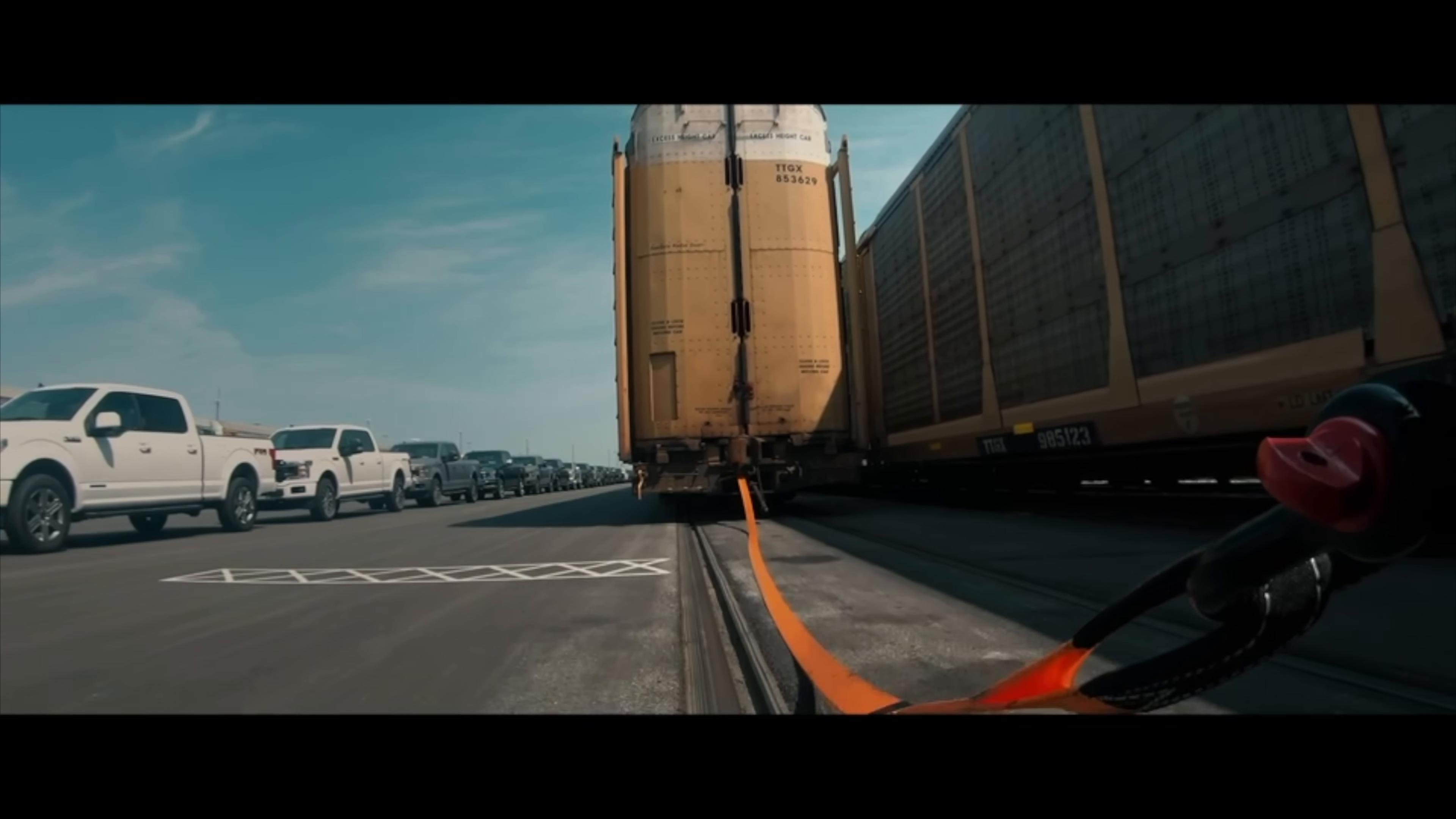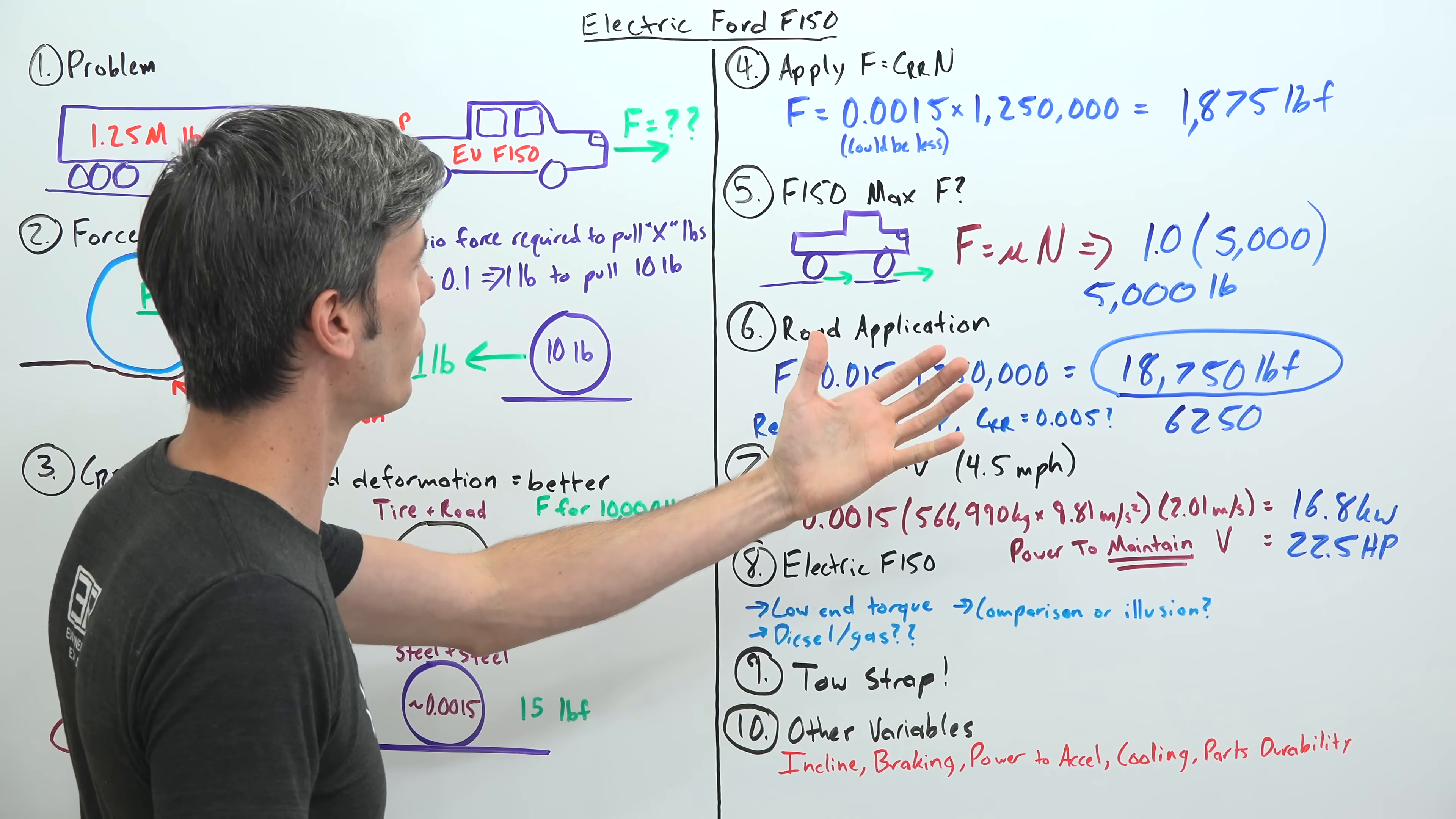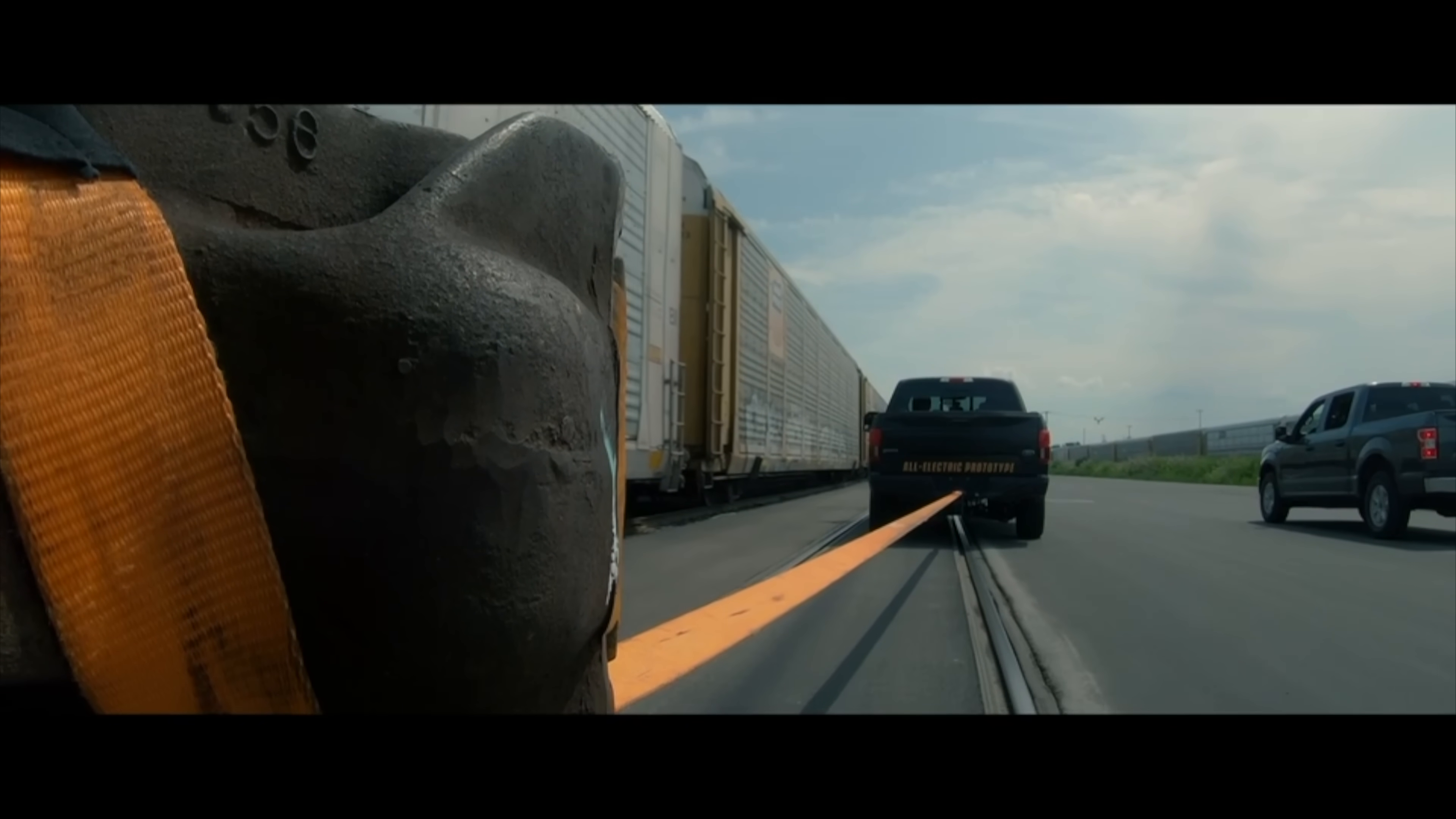Now I want to talk about the tow strap for a moment because the top comments on this video were all saying, wow, this is an amazing tow strap. How does a tow strap capable of pulling such a crazy high load? Well, as we have demonstrated, the force required to start pulling this thing is 1,875 pounds of force. So you only need a 2,000 pound tow strap to make it work. There's nothing fancy about the tow strap. Pretty much any tow strap out there will probably be able to do it, as long as it's rated for at least 2,000 pounds.